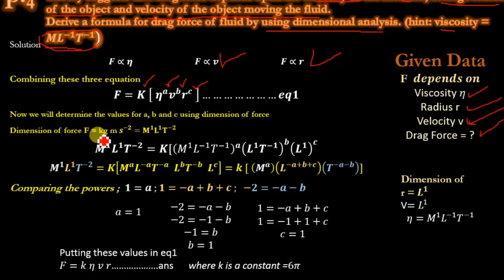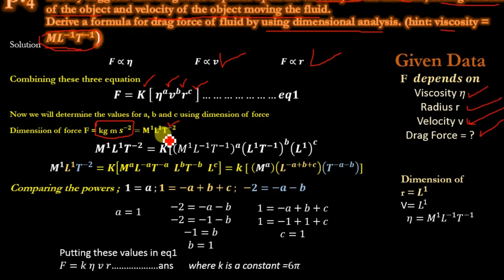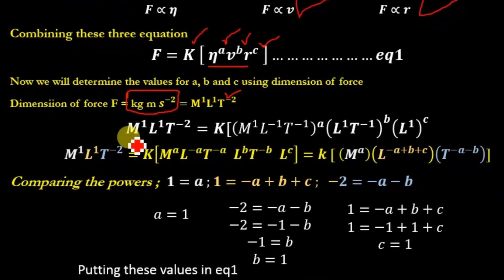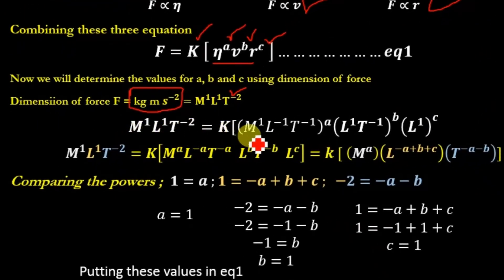The dimensions of force are kg·m/s², which gives M¹L¹T⁻². We will compare these with the dimensions of the quantities on the right side. The dimensions of force M L T⁻² equal K times the dimensions of viscosity, which are given as M L⁻¹ T⁻¹, raised to power A.